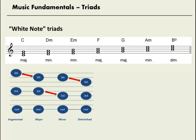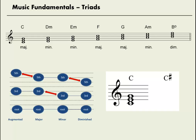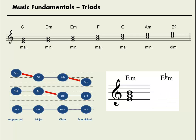How would we spell C sharp major? Well, C E G is major — we know that from the white note spelling — and so all we have to do is raise all three pitches, and we get C sharp major because the relationship is exactly the same. How would we spell E flat minor? Well, E G B is already minor, and so if we lower all three — E flat, G flat, B flat — that has to also be minor, and so that's how we spell E flat minor.